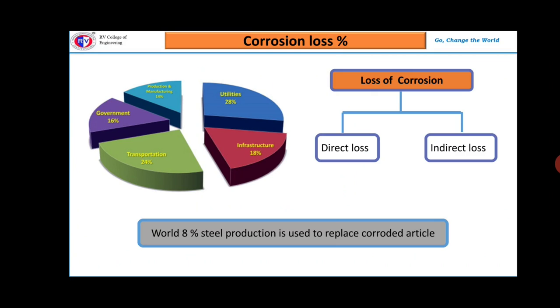Though corrosion is slow and occurs only on the surface of metals, the losses due to corrosion are enormous. Losses occurring due to corrosion cannot be measured in terms of metals alone, but we have to consider the cost of fabrication and other factors also.